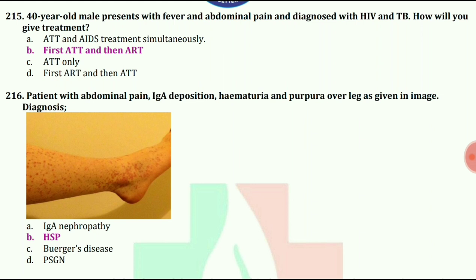Patient with abdominal pain, IgA deposition, hematuria, and purpura over leg as given in the image. What is the diagnosis? The answer is HSP (Henoch-Schönlein Purpura).